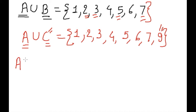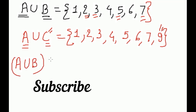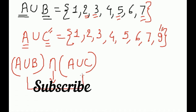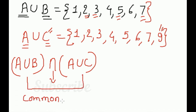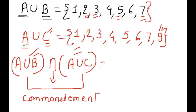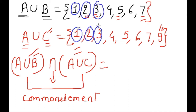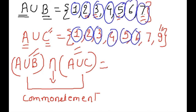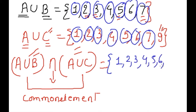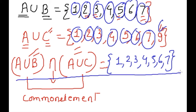Now we find (A ∪ B) ∩ (A ∪ C). Intersection means we find the common elements between A ∪ B = {1,2,3,4,5,6,7} and A ∪ C = {1,2,3,4,5,6,7,9}. Common elements are 1, 2, 3, 4, 5, 6, 7. The element 9 was not common. So (A ∪ B) ∩ (A ∪ C) = {1, 2, 3, 4, 5, 6, 7}. This is our RHS.